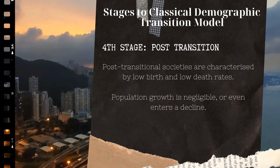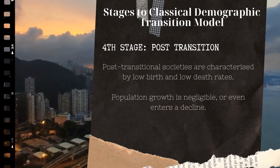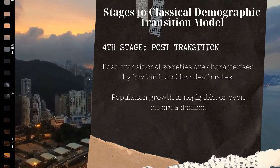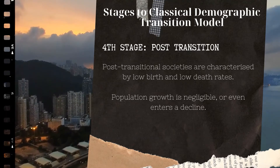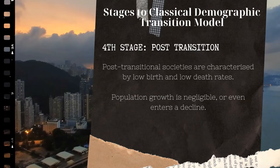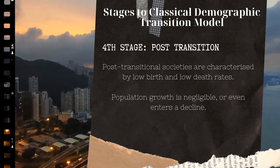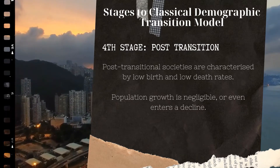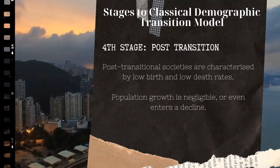The fourth stage of the classical demographic transition model is called the post-transition. In stage four, birth rates and death rates are both low, stabilizing total population growth. The decline in both birth and death rates of most stage four countries have been attributed to strong economies, highly educated citizens, ample healthcare systems, the migration of people from rural communities to cities, and expanded employment opportunities for women.